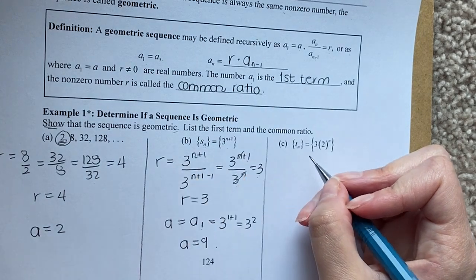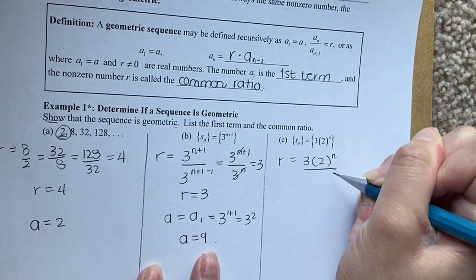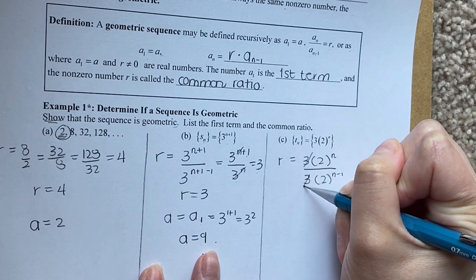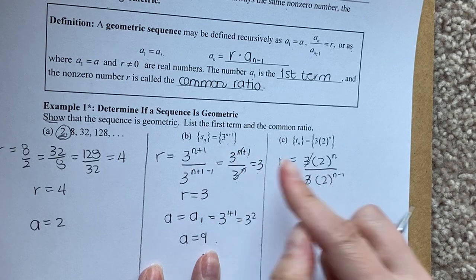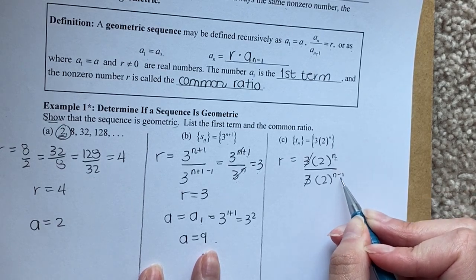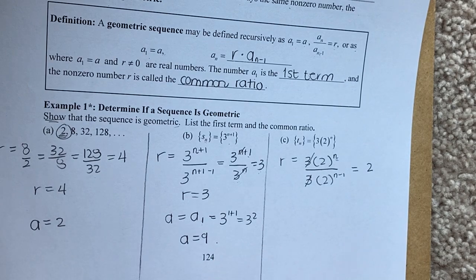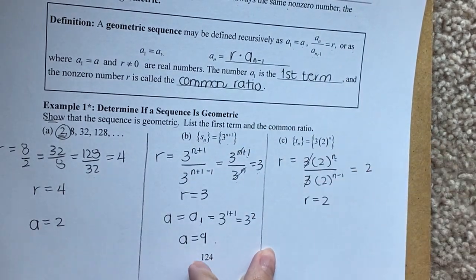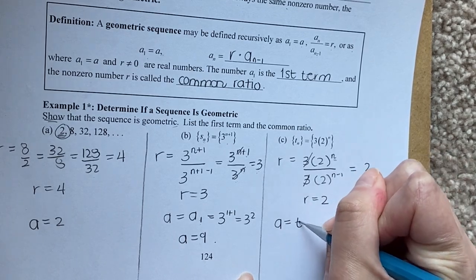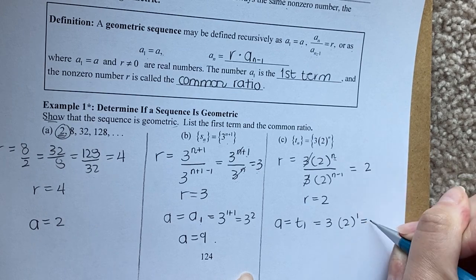For the next sequence with notation 3·2^n, R equals 3·2^n divided by 3·2^(n-1). The threes cancel, leaving 2^n divided by 2^(n-1). Subtracting exponents gives 2^1 = 2, so R equals 2. The first term is found by plugging n equals 1: A₁ = 3·2^1 = 6.